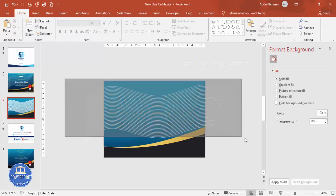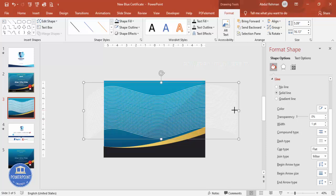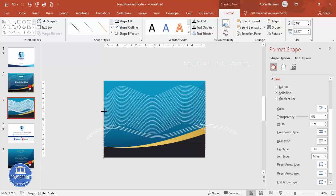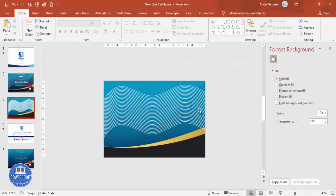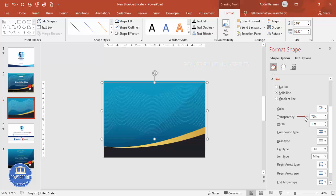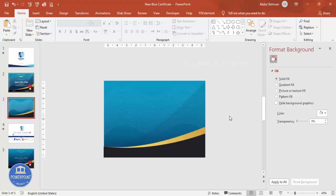Select all the curve lines and press Ctrl+G to group them. Reduce the width of the group as needed, deleting any excess. Select the group and increase the transparency so the lines appear very subtle in the background. Send this group to the back — during the slideshow it will look like faint background lines.